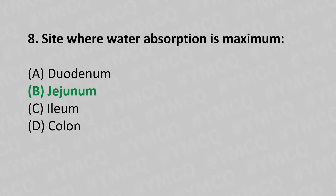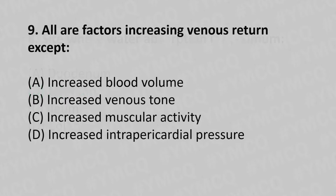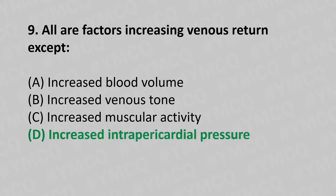Moving to our ninth question. All are the factors increasing venous return except: Option A, increased blood volume. Option B, increased venous tone. Option C, increased muscular activity. Option D, increased intrapericardial pressure. And the answer is Option D, increased intrapericardial pressure.